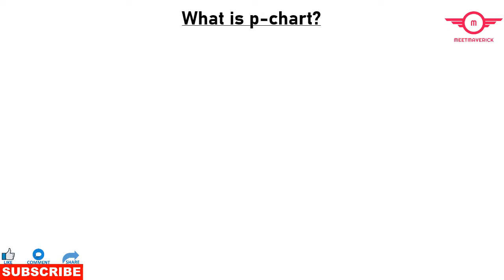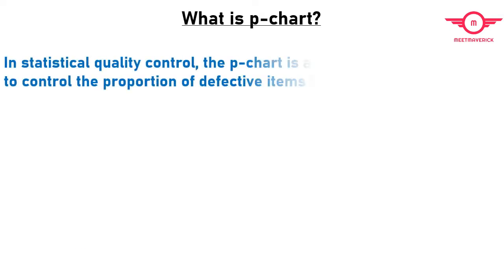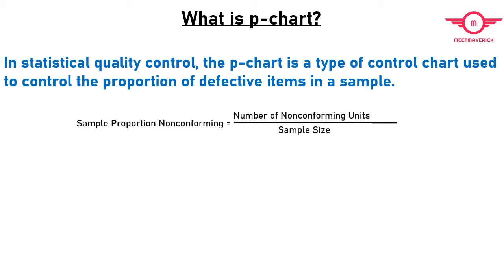What is p-chart? In statistical quality control, the p-chart is a type of control chart used to control the proportion of defective items in a sample, where the sample proportion non-conforming is defined as the ratio of the number of non-conforming units to the sample size n.